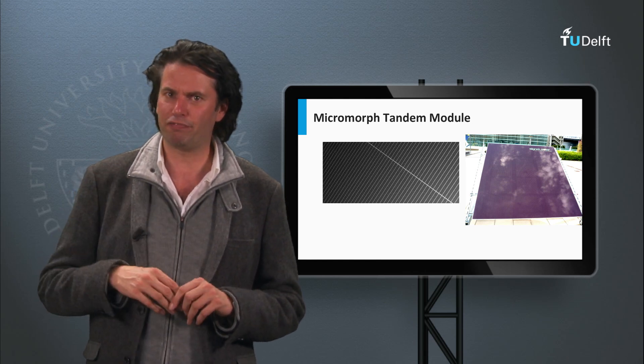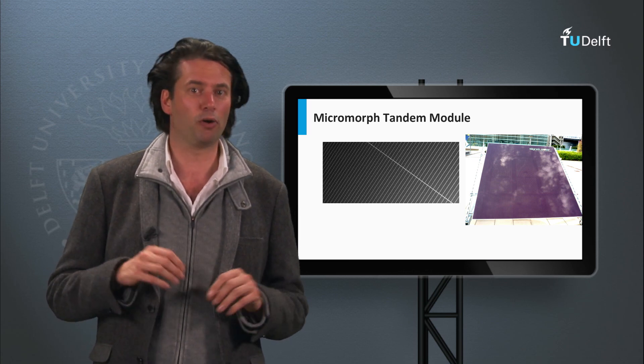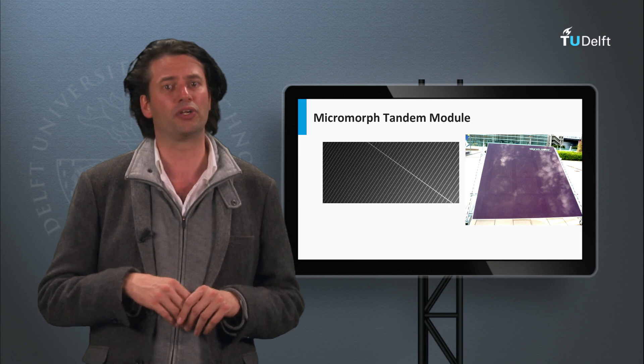The best module efficiencies are in the order of 11% as achieved by companies like Tokyo Electron, Panasonic, and Kaneka.